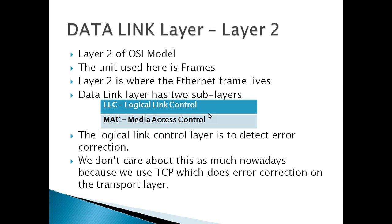The unit used in the data link layer is frames — that's why we normally call them ethernet frames. This is the layer where the ethernet frame lives. The data link layer has two main sub-layers: Logical Link Control (LLC) and Media Access Control (MAC). Logical Link Control checks for error detection in frames, which nowadays is handled by the TCP layer itself, so we don't need to worry about LLC.